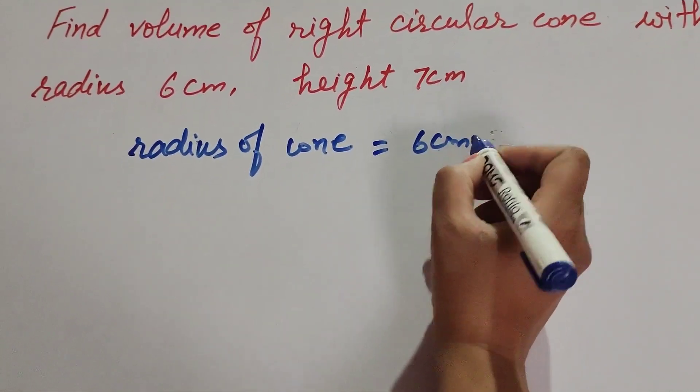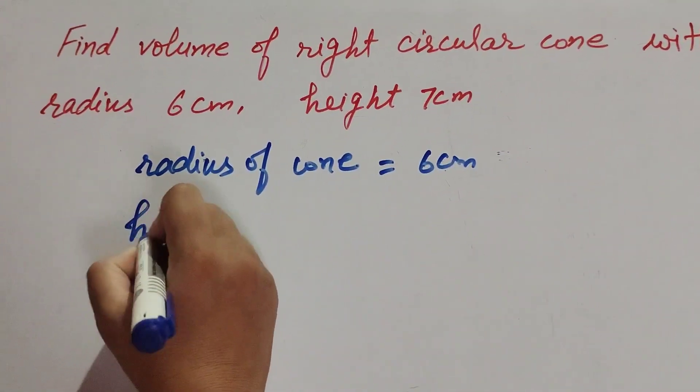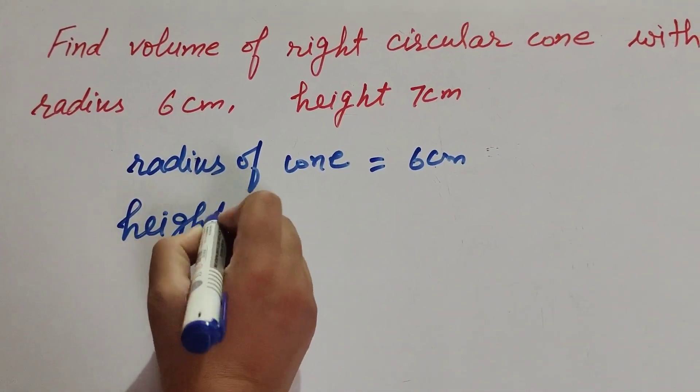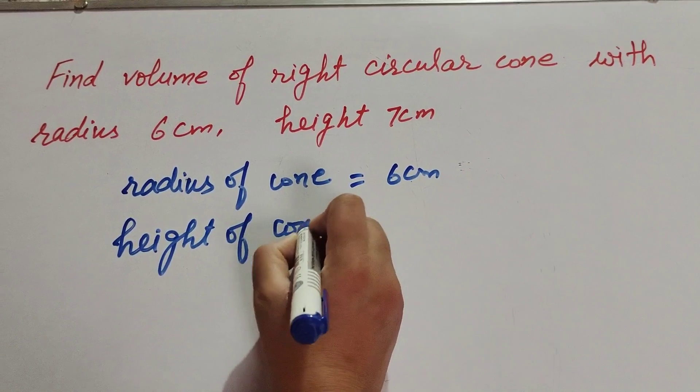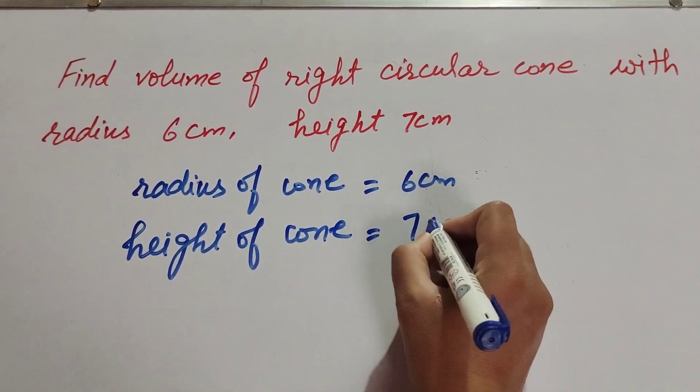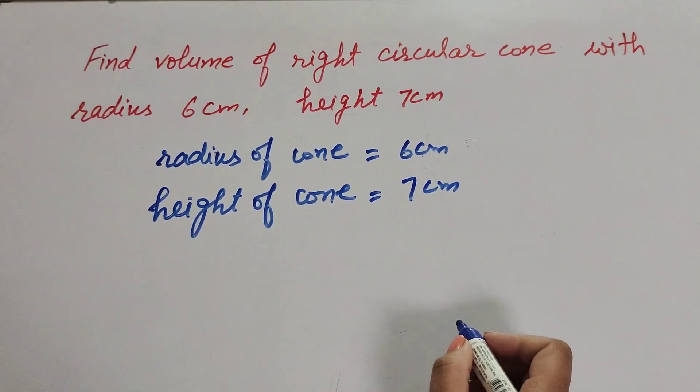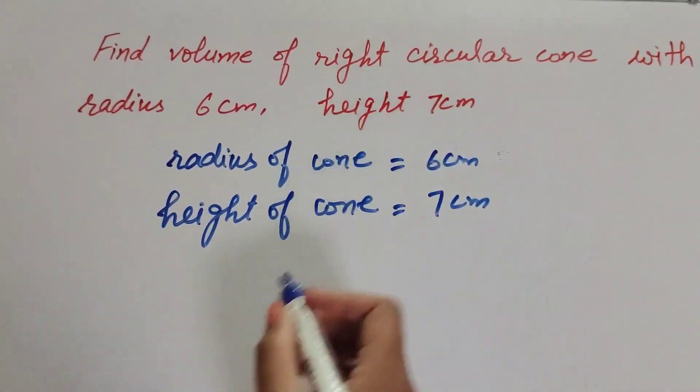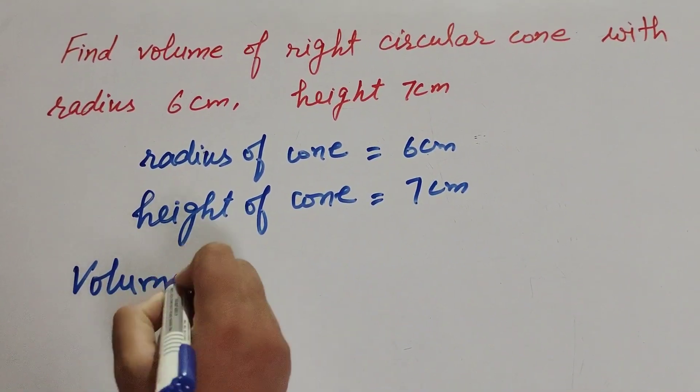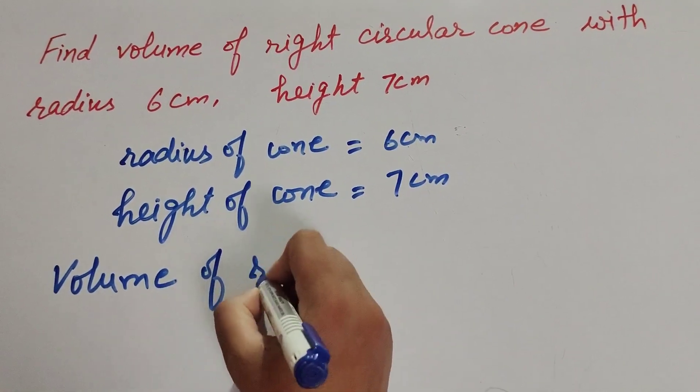equals 6 centimeters. Height of cone equals 7 centimeters. We need to find the volume of the right circular cone. So, volume of right